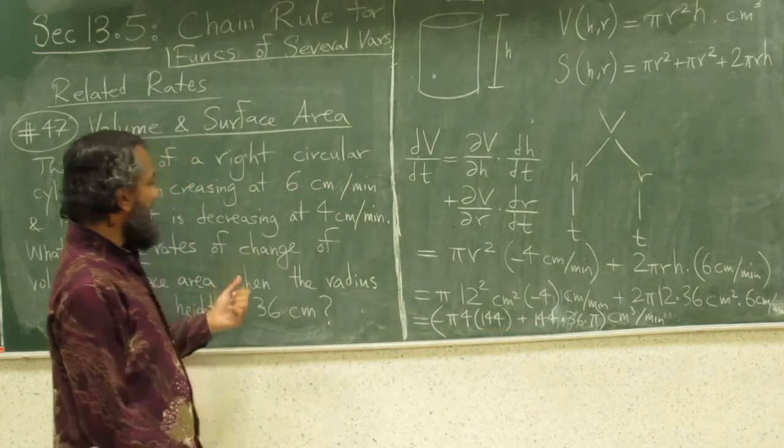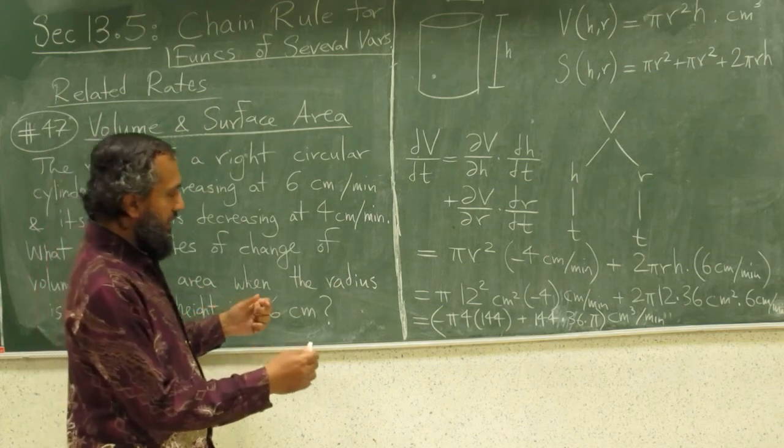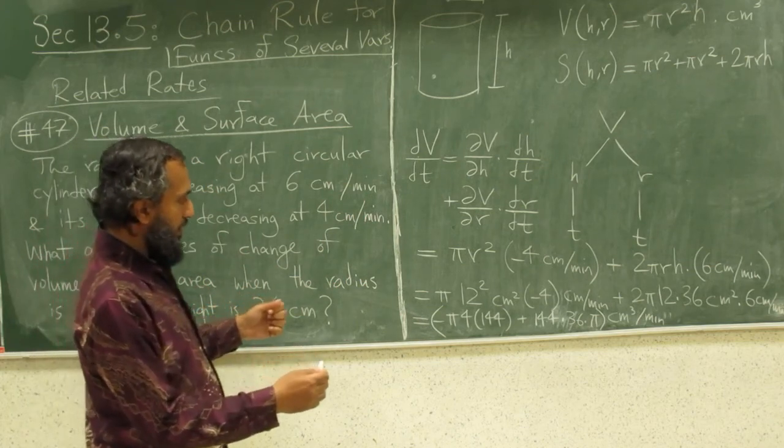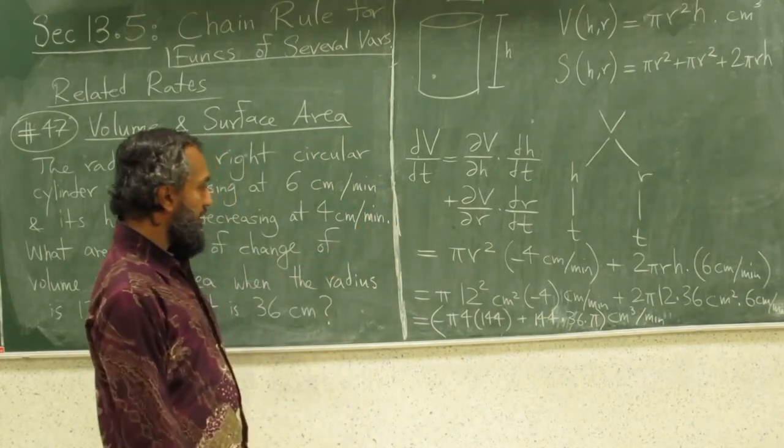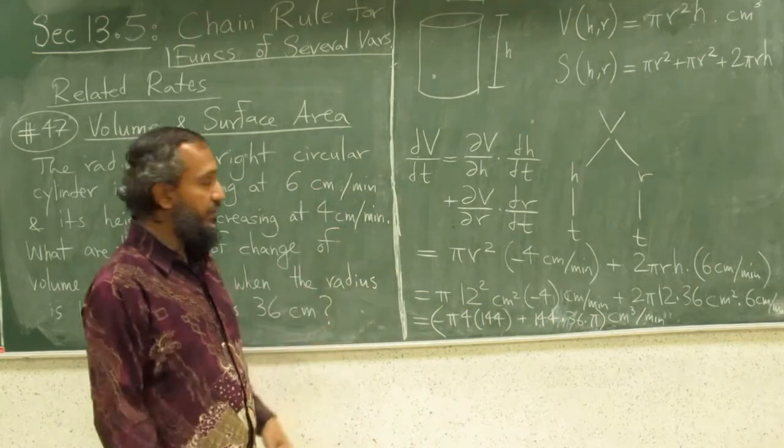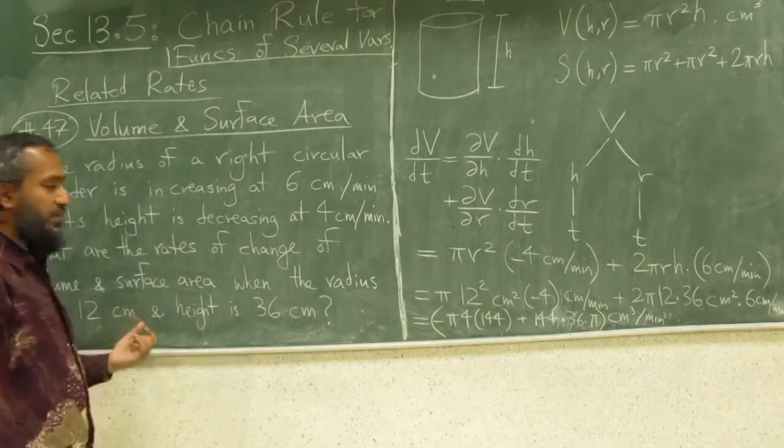The height is shrinking at the lower rate and the radius is increasing fast. But because the height is big, it is still currently the rate of growth of the volume, the volume is actually increasing.